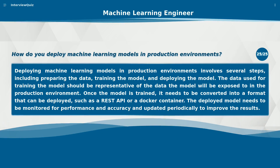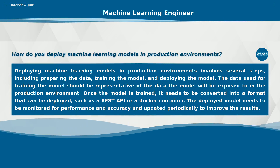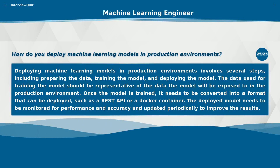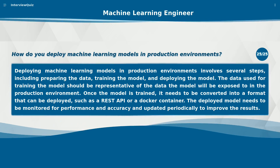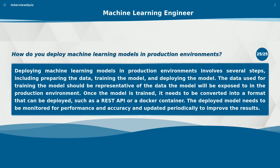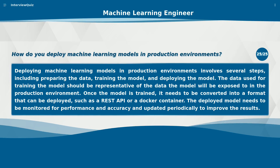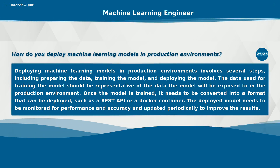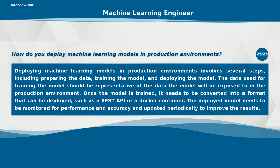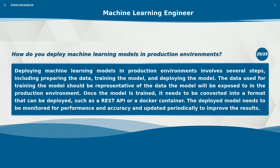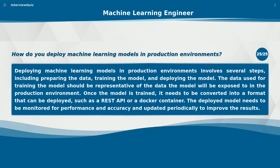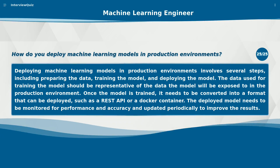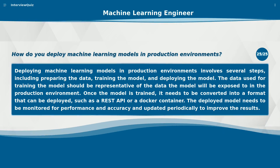How do you deploy machine learning models in production environments? Deploying machine learning models in production environments involves several steps, including preparing the data, training the model, and deploying the model. The data used for training should be representative of the data the model will be exposed to in the production environment. Once the model is trained, it needs to be converted into a format that can be deployed, such as a REST API or a Docker container. The deployed model needs to be monitored for performance and accuracy and updated periodically to improve the results.